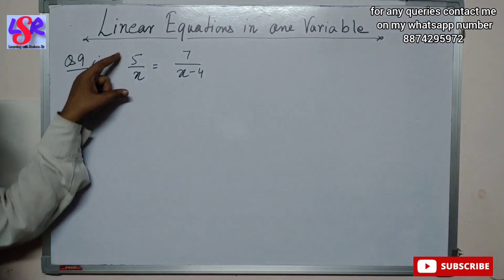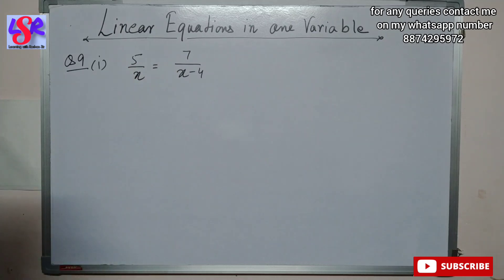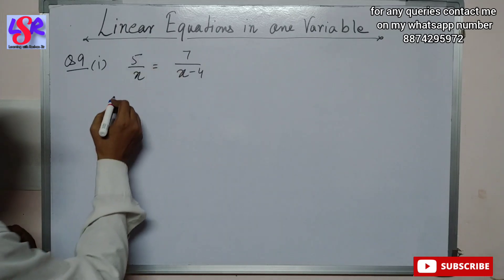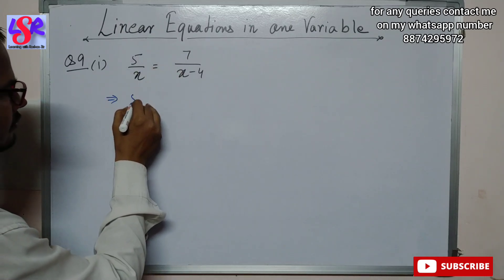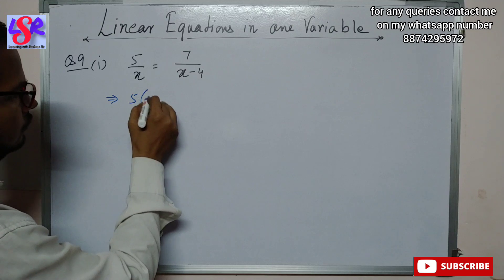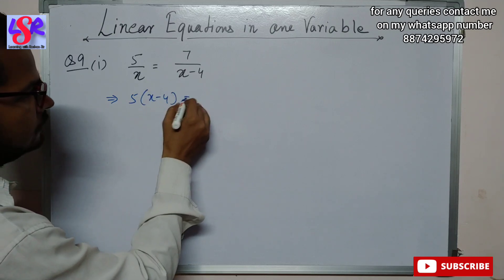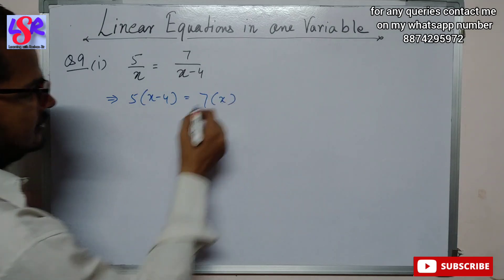Here we are having 5/x = 7/(x - 4). We do cross multiplication, which gives 5 × (x - 4) = 7 × x.